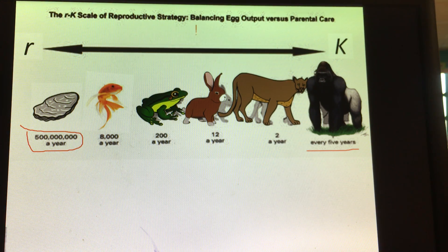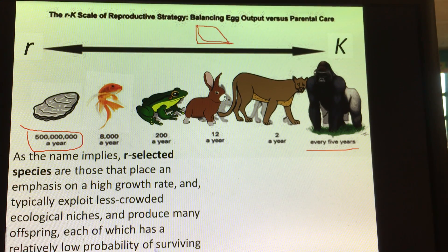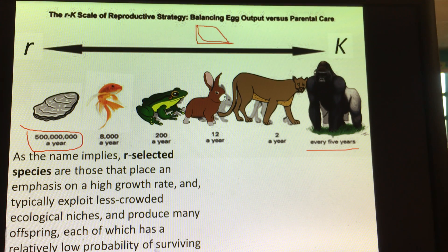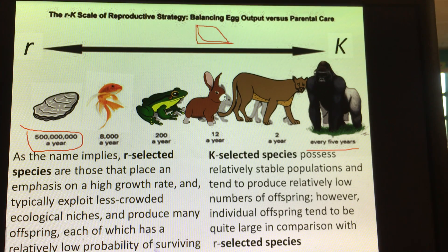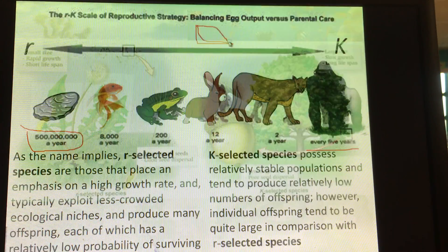Looking at survivorship curves, oysters would be Type 3 — an R-selected species — whereas gorillas would be a K-selected species. R-selected species place an emphasis on high growth rate and typically exploit less crowded niches, producing many offspring but with a low probability of surviving to adulthood. K-selected species have very stable populations with low numbers of offspring, but individual offspring tend to be quite large in comparison.